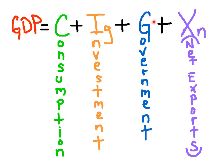Government purchases consists of all spending on goods and services or for resources. This includes the military, this includes infrastructure — bridges, roads, tunnels, etc. This does not include transfer payments, such as Social Security.